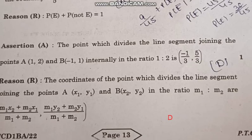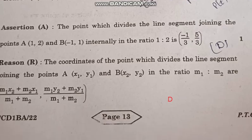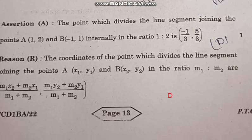Question number 20: Assertion - The point which divides the line segment joining the points A (1, 2) and B (−1, 1) internally in the ratio 1:2 is (−1/3, 5/3). Reason - The coordinates of the point which divides the line segment joining points A (x₁, y₁) and B (x₂, y₂) in the ratio m₁:m₂ are given by the section formula. The correct answer is option D, A is false but R is true.